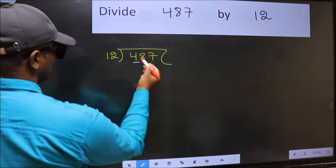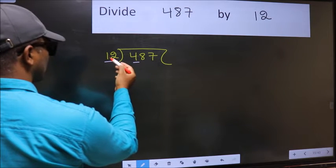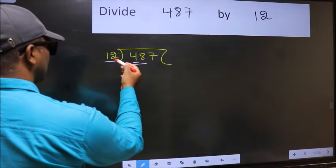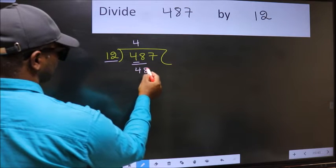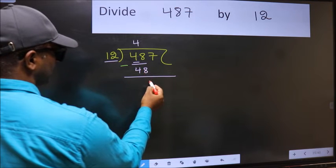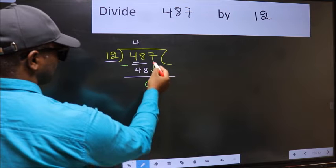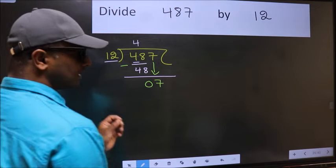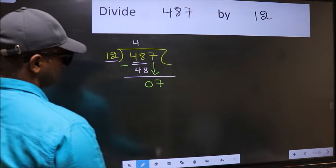Here we have 4, and 12. Since 4 is smaller than 12, we take two digits: 48. When do we get 48 in the 12 times table? 12 fours are 48. Now subtract: 48 minus 48 equals 0. After this, bring down the next number, which is 7.